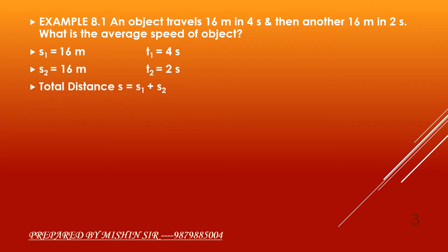Total distance s is equal to s1 plus s2. Substituting the values, we get 16 plus 16 which is equal to 32m.